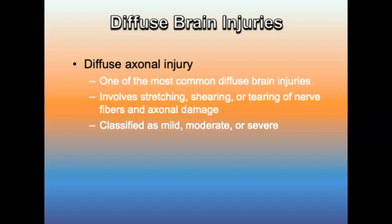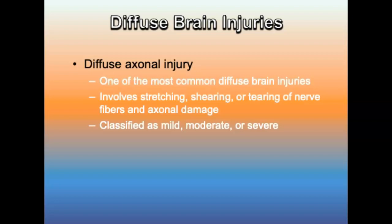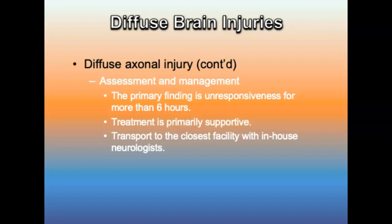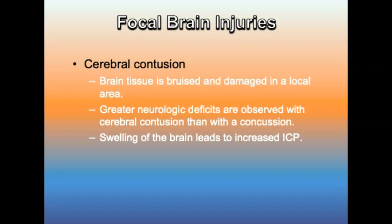Diffuse axonal injury involves stretching, shearing, and tearing of nerve fibers and axonal damage caused by high-speed rapid acceleration or deceleration forces. It is classified as mild, moderate, or severe. The primary finding is unresponsiveness lasting more than six hours; treatment is primarily supportive. Be alert for airway compromise and transport patients to a facility with an in-house neurologist. Grossly observable brain injuries include cerebral contusion, where brain tissue is bruised and damaged in a local area with greater neurologic deficits than a concussion. The frontal lobe is most commonly affected, and swelling leads to increased intracranial pressure.